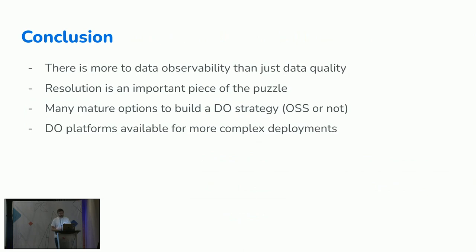Overall, there's more to data observability than just assertions, unit tests, and data quality checks. You need to be able to prevent the issues, detect them quickly and automatically, detect them in a customized way, and also resolve them with context. There are lots of very mature options to add data observability and data quality into your stack. Data quality is a known issue, and whether open source or not, it's not a barrier to adding something to your DAGs.